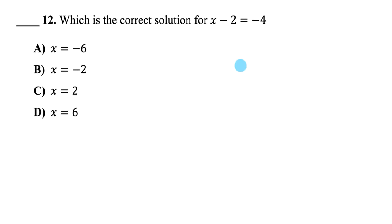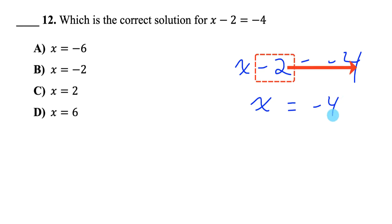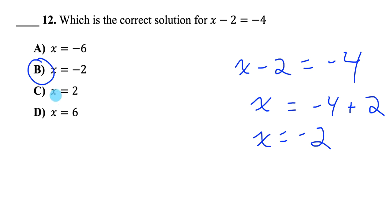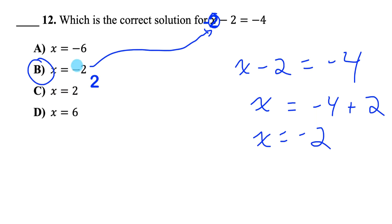Question 12: What's the correct solution to x minus 2 equals negative 4? Use inverse operations to isolate x — add 2 to the other side to get negative 2. For any equation-solving question, plug your answer in and make sure it makes the equation true. Is negative 2 minus 2 equal to negative 4? Yes — correct answer. If you had no idea, you could plug the possible answers in one by one and see which makes it true.